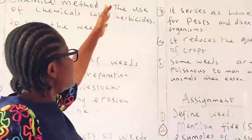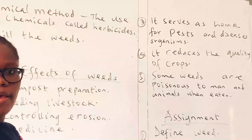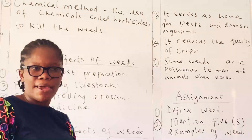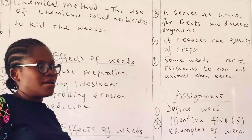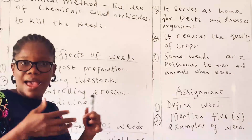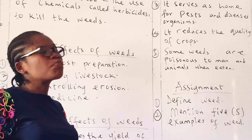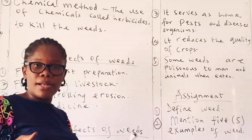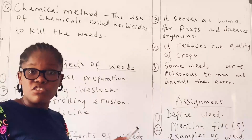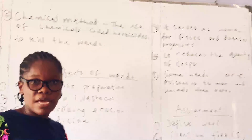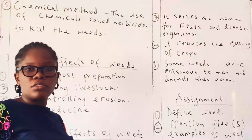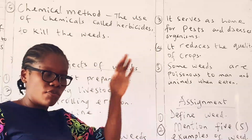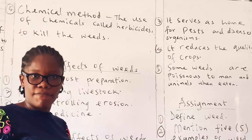The third bad effect: weeds serve as a home for pests and disease organisms. If you allow weeds to grow in your farm among your crops, they will help house pests like grasshoppers and crickets which can eat your crops. It is better for you to remove them. Weeds also reduce the quality of crops — pests render the fruits and vegetables unattractive and unmarketable. When such crops are taken to market, people would prefer the attractive ones and leave those affected by pests.